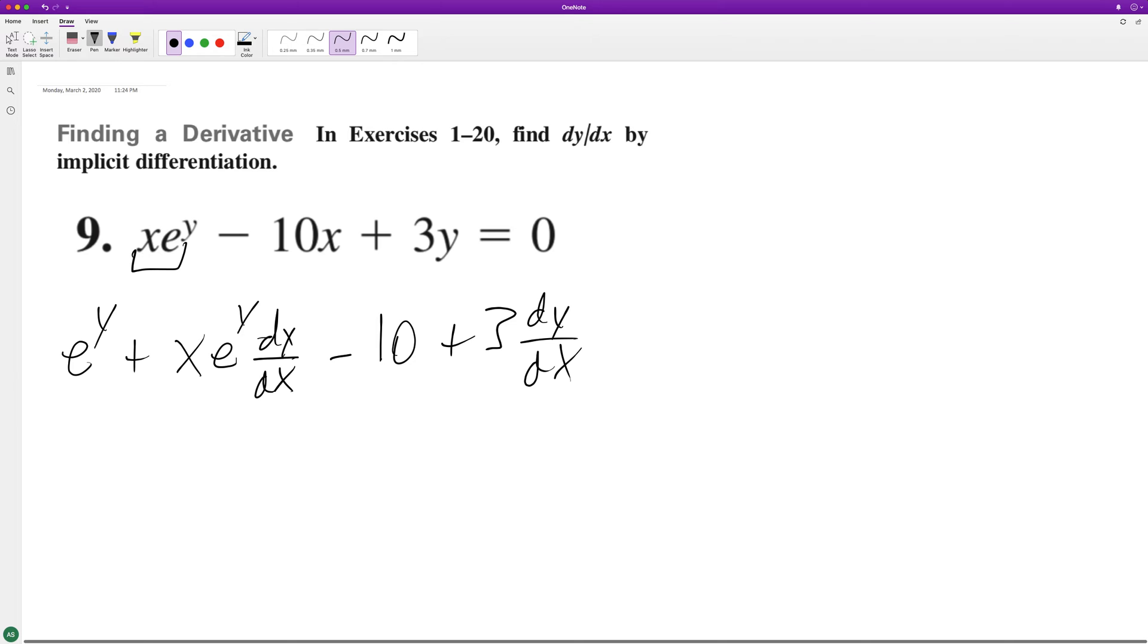So get everything that's not dy dx on the other side, so we have x e raised to the y dy dx, plus 3 dy dx is equal to 10 minus e raised to the y.